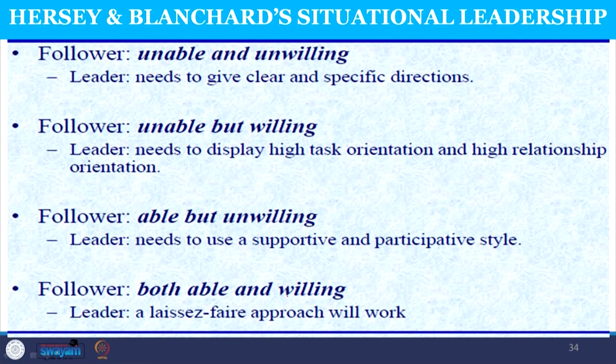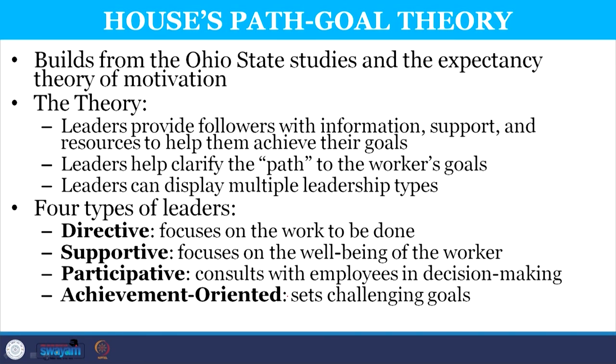To summarize: when followers are unable and unwilling, the leader gives clear and specific directions. When the follower is unable but willing, the leader displays high task orientation and high relationship orientation. When followers are able but unwilling, leaders use a supportive and participative leadership style. When followers are both able and willing, the leader adopts a laissez-faire approach. We discussed two broad categories of situational leadership: Fiedler's contingency model and the model proposed by Hershey and Blanchard. In the next section we will move towards the path-goal theory of leadership.